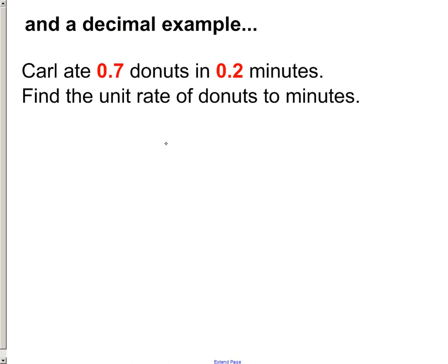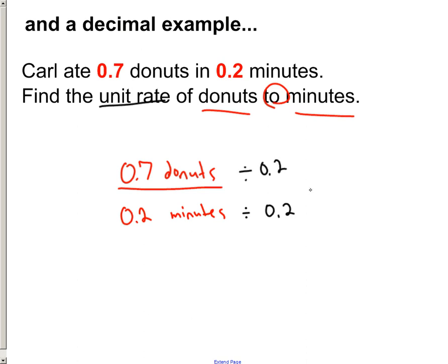Last one though. What would we do if there were decimals in here? It's still donuts to minutes, still the same problem to find a unit rate. So 0.7 donuts divided by 0.2 minutes. You need to divide it by itself and divide the top the same. And we get a pretty cool answer. It would be one minute on the bottom, obviously. But it turns out to exactly be 3.5 donuts. So the unit rate is 3.5 donuts to one minute.